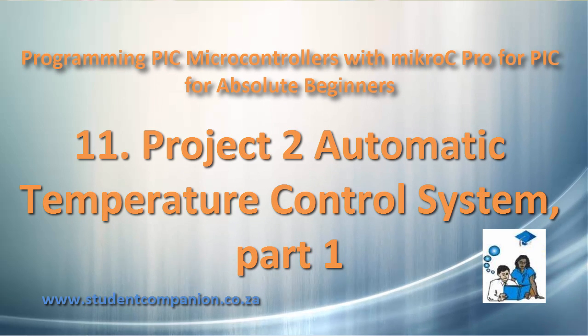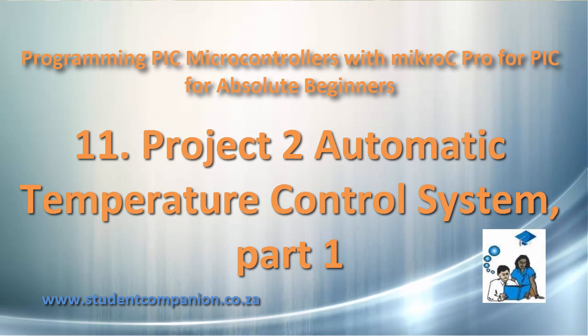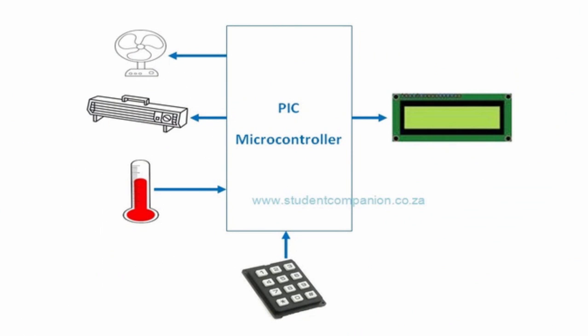Hi guys, welcome to this 11th tutorial in this series of programming PIC microcontroller with MikroC Pro for PIC compiler. This is our second project in this series. In this project we're going to design an automatic temperature control system, which has the ability to monitor and control the temperature of a specified space without human intervention. This area could be a small plant, a house, or any place or device that requires a controlled temperature, like a chicken incubator for example.